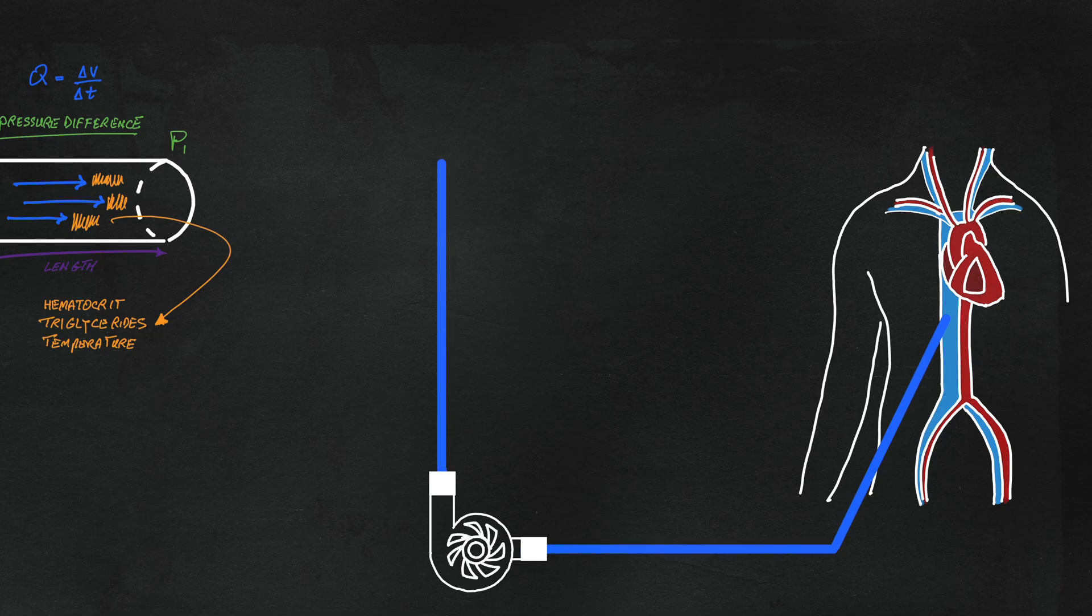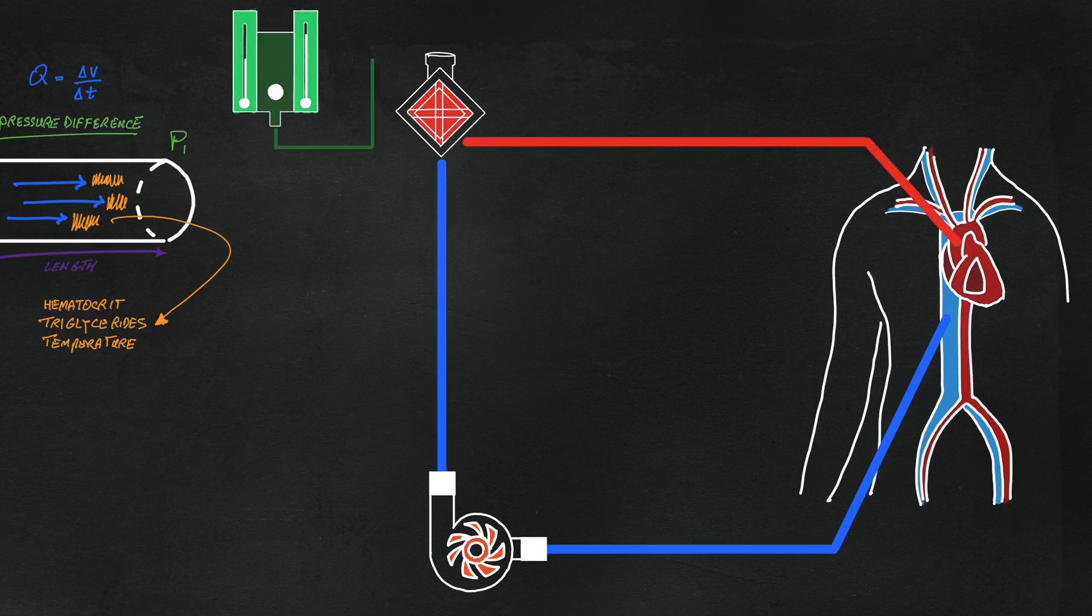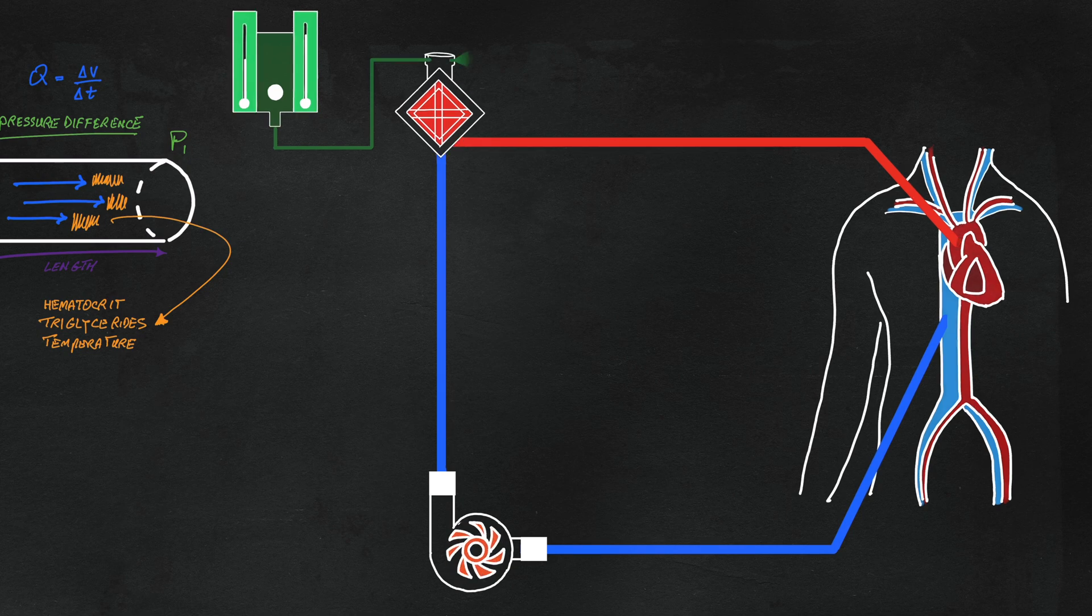Basic ECMO configuration consists of a pump, membrane oxygenator, tubing, vascular access, and cannulae. The oxygenator is connected to a source of fresh gas flow via an air-oxygen blender and heat exchanger.